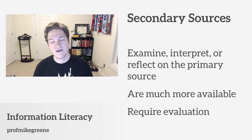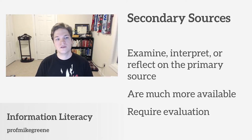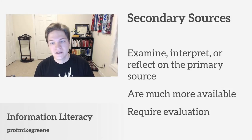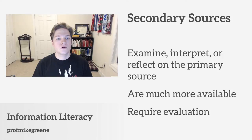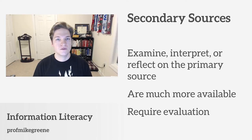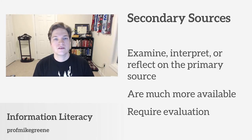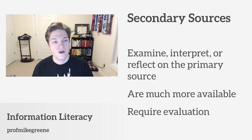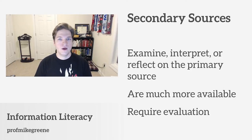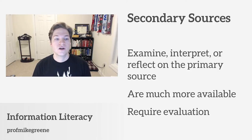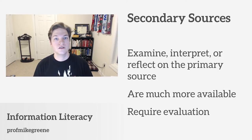So how does that differ from a secondary source? The point of a secondary source is to do something to a primary source — examine it, evaluate it, critique it, interpret it, reflect on it — in order to reuse that information for another purpose, to restate it a different way, or to present your point of view. When doing research, secondary sources are much more available, but we have to evaluate them critically to ensure that care has been taken to maintain the integrity of the original information and the original point of view.